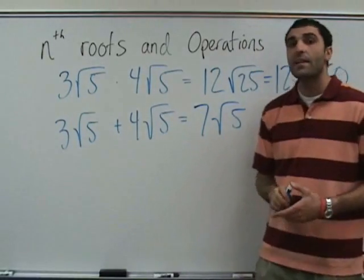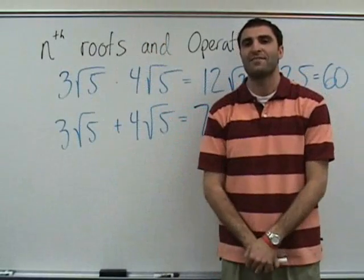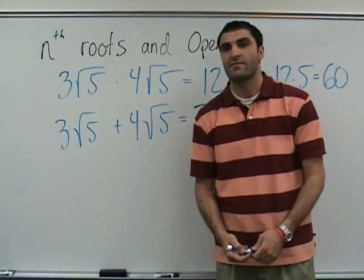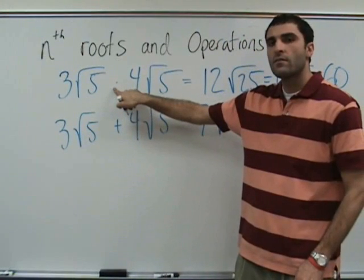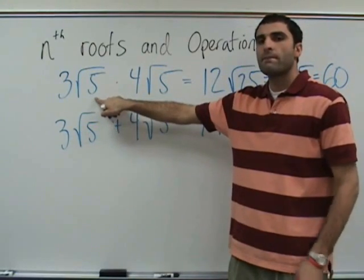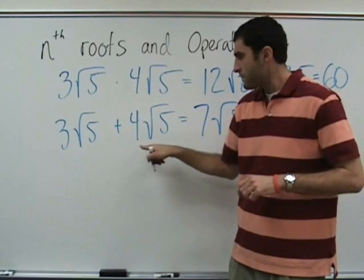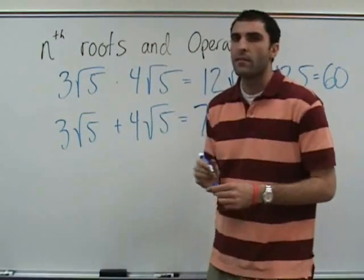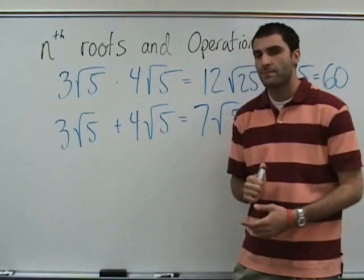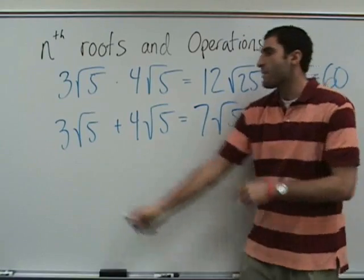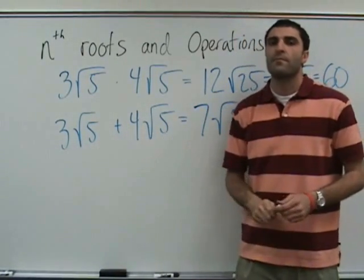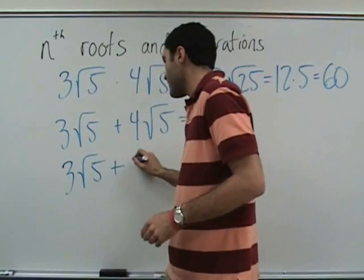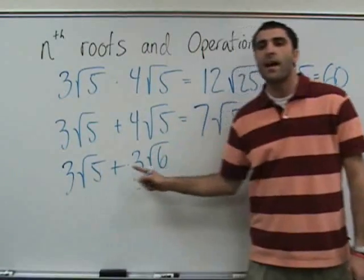Can you do 3 times the square root of 5 plus 4 times the square root of 6 times the square root of 5? Can you find the answer to 3 square root of 5 on the second one, find both answers, and then add them together? This is in simplest form. Let's say they weren't like terms — so 3 square root of 5 plus 3 square root of 6. Can these be combined? No.